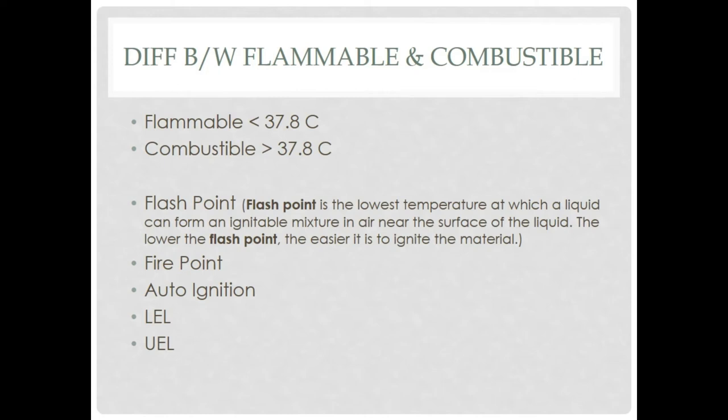Fire point is the temperature at which, with a slight ignition source, the chemical continues burning. Auto-ignition is the temperature at which a flammable liquid — for example, petrol, ether, toluene, or ethanol — when in open direct sunlight or open atmosphere, rises in temperature enough that volatiles reach the flash point and the material automatically ignites, which is called auto-ignition.